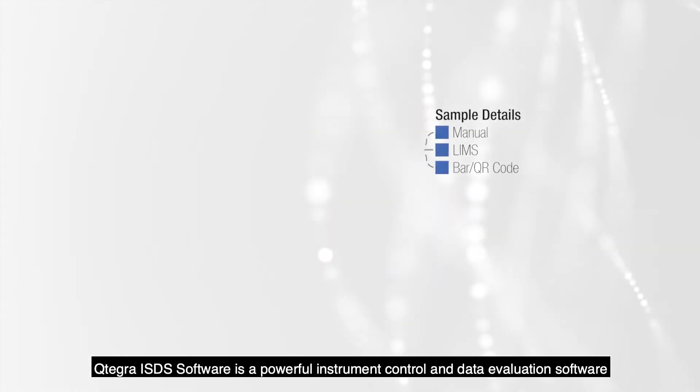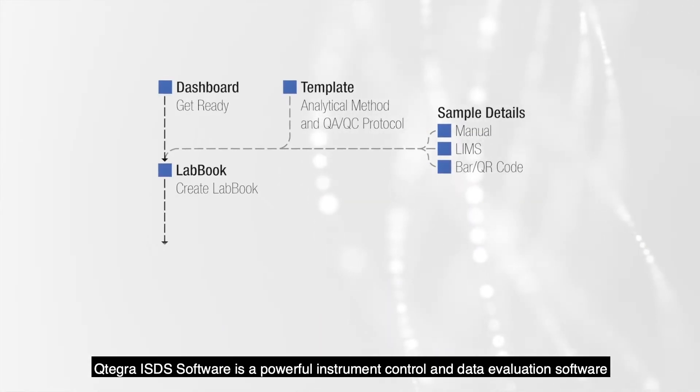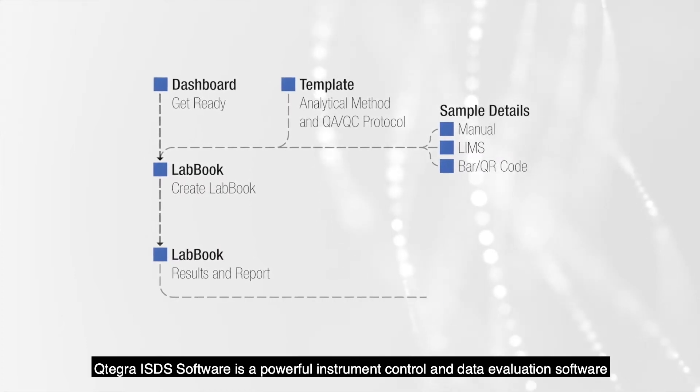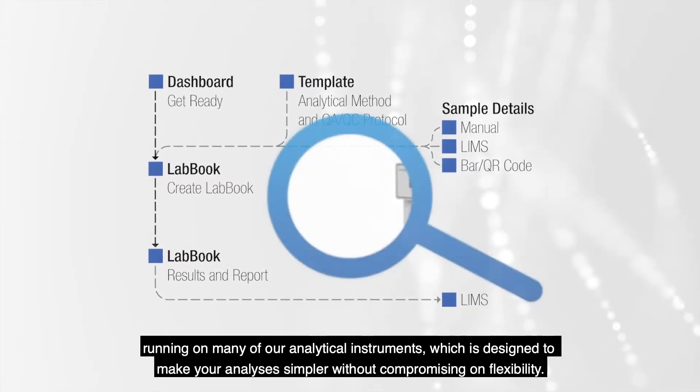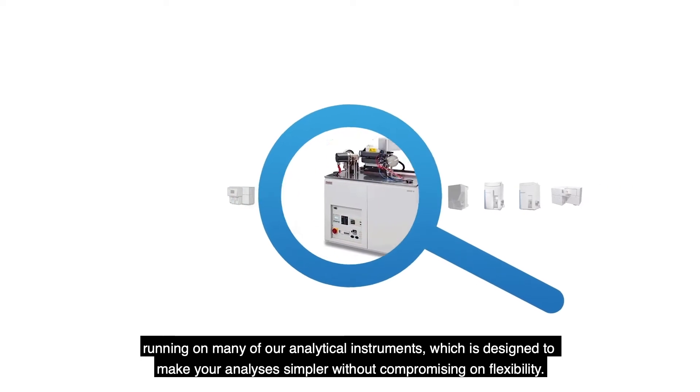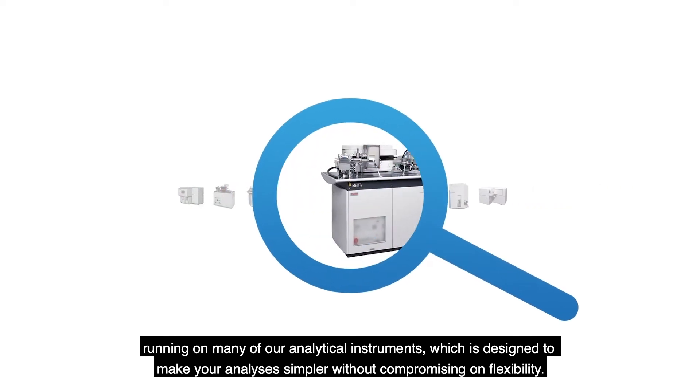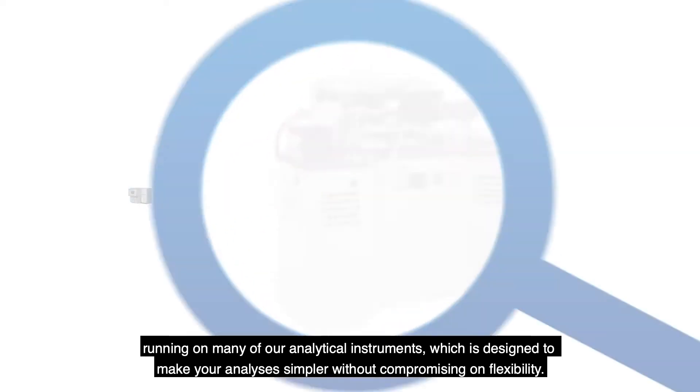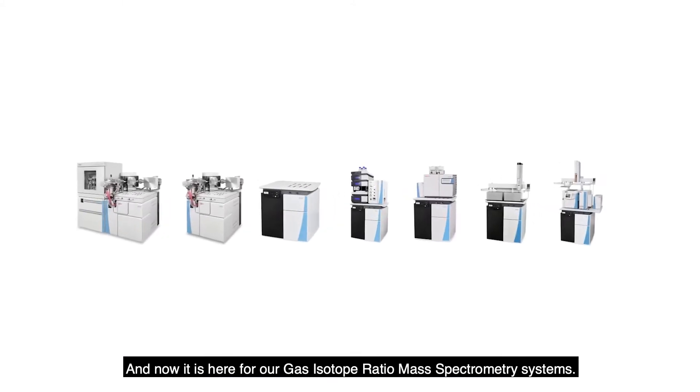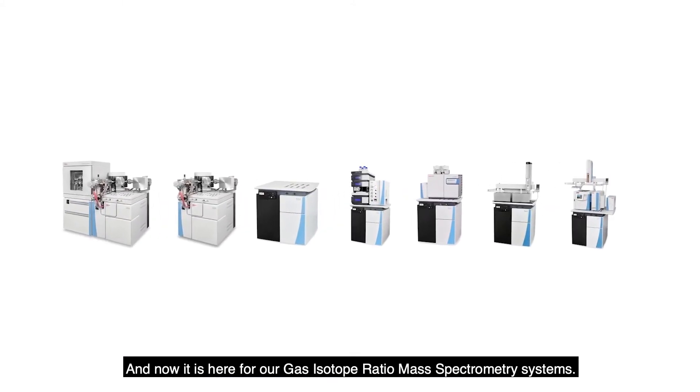Qtegra ISDS Software is a powerful instrument control and data evaluation software running on many of our analytical instruments, which is designed to make your analysis simpler without compromising on flexibility. And now it is here for our gas isotope ratio mass spectrometry systems.